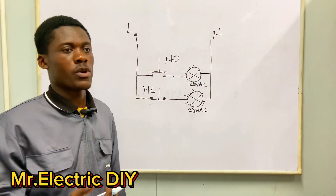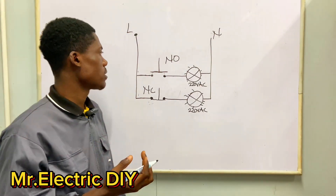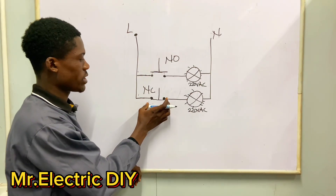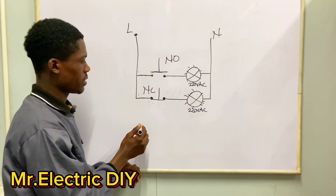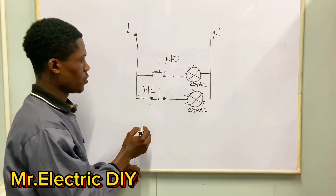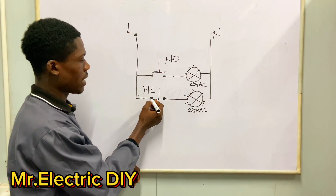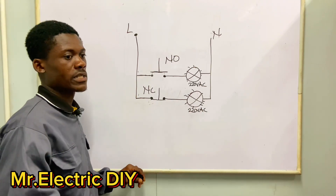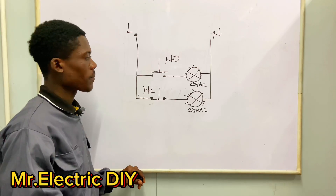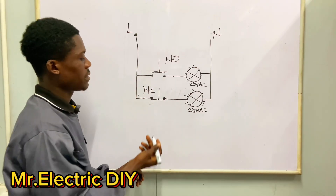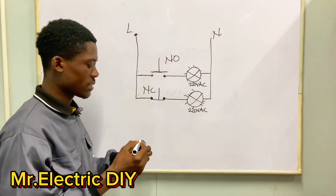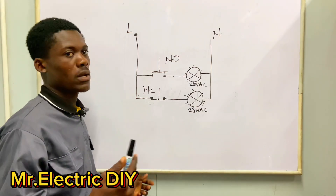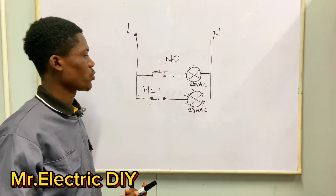So that is what normally closed and normally open mean. When we say normally closed, it is the initial state of the switch — it's going to allow flow of current, it is going to conduct electricity. Normally open is not going to conduct electricity.